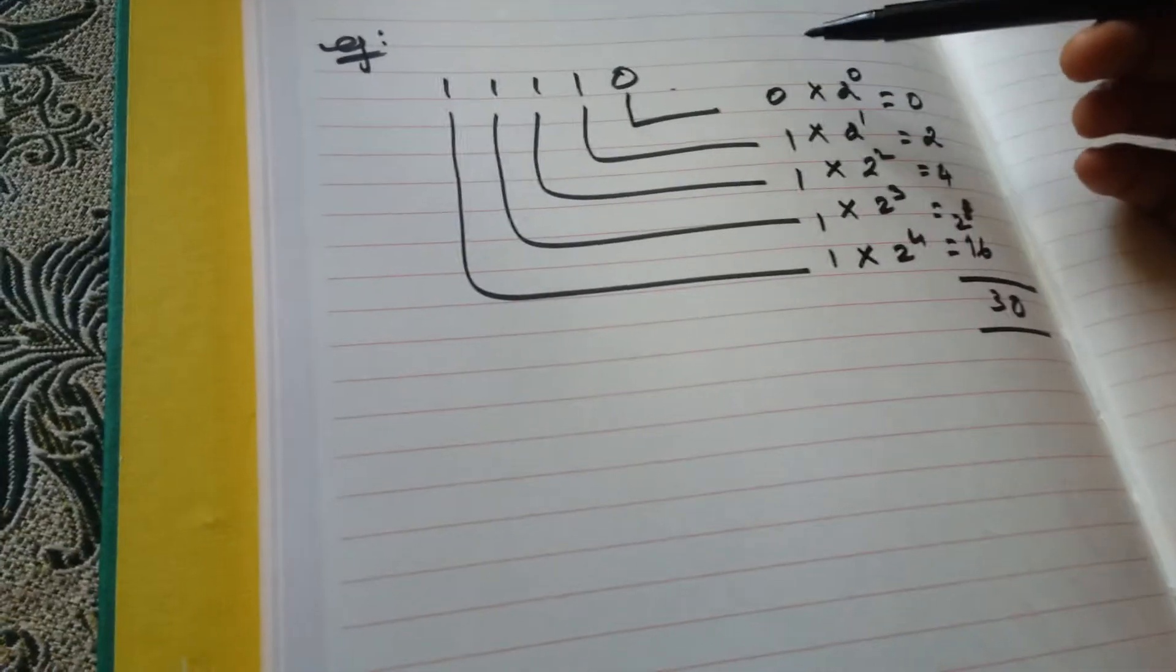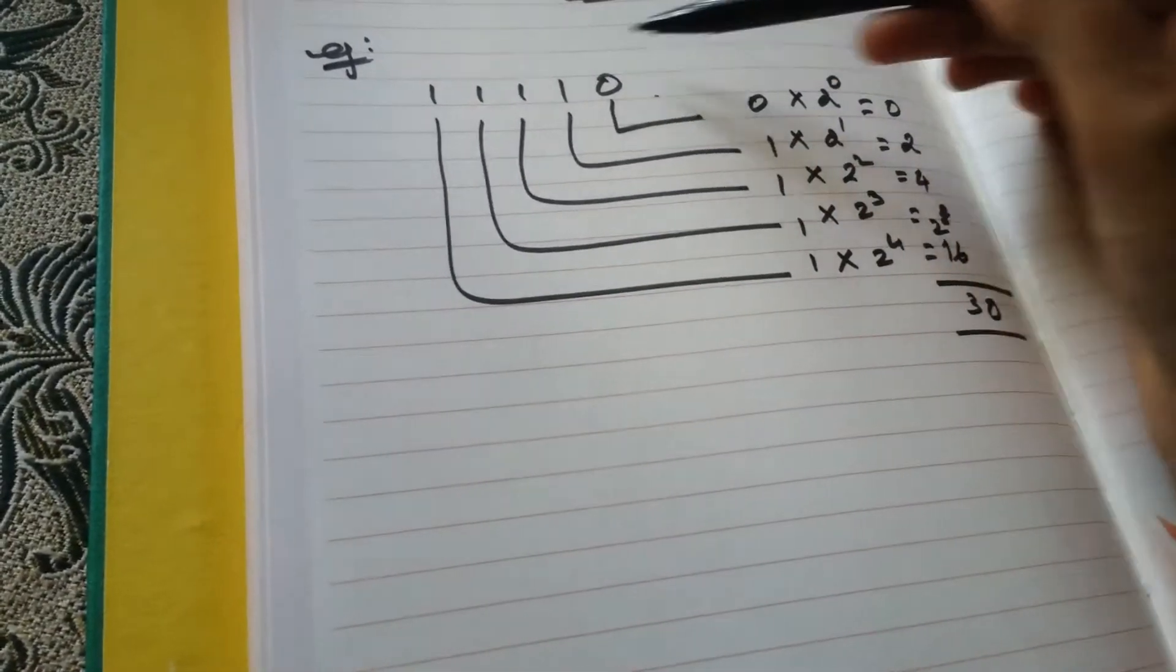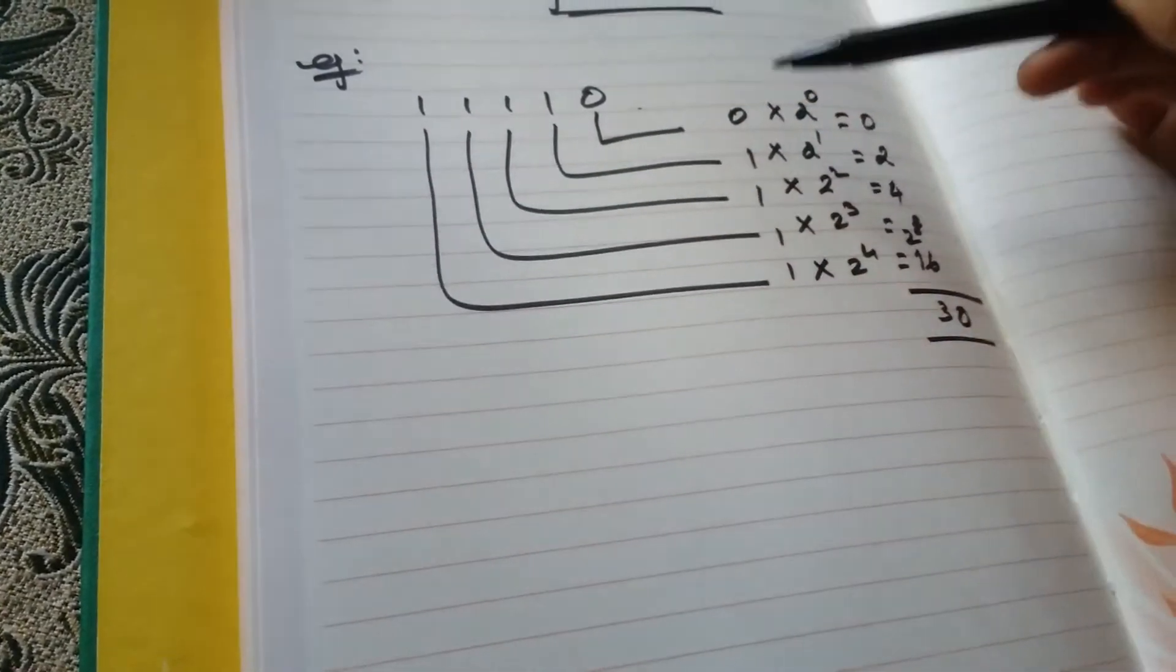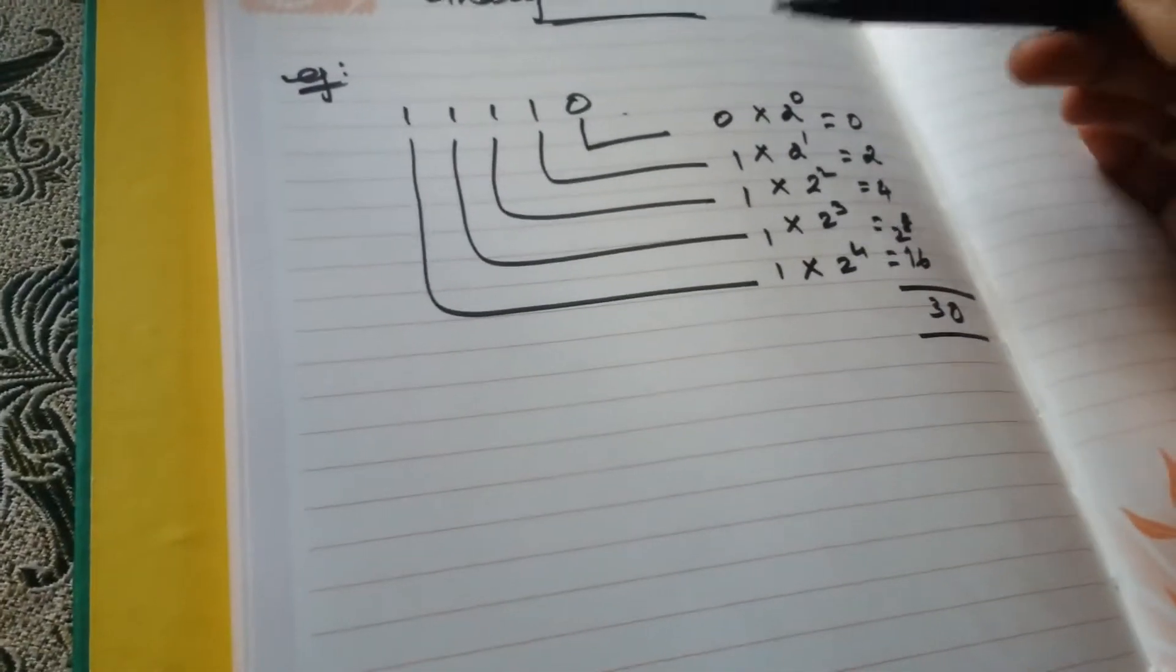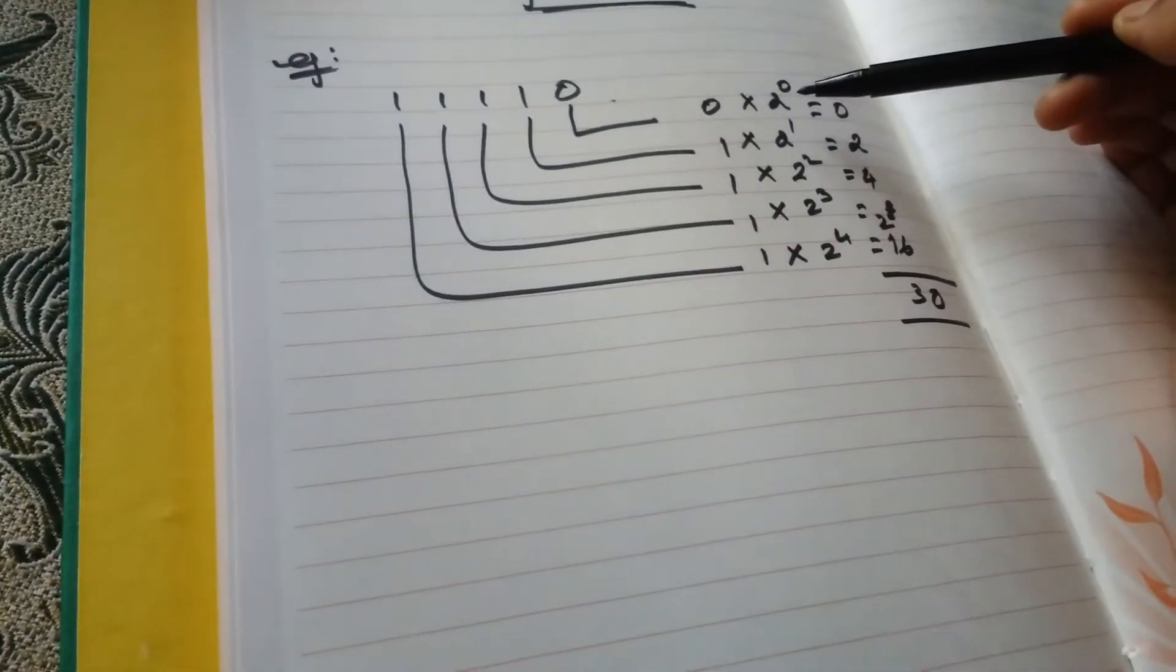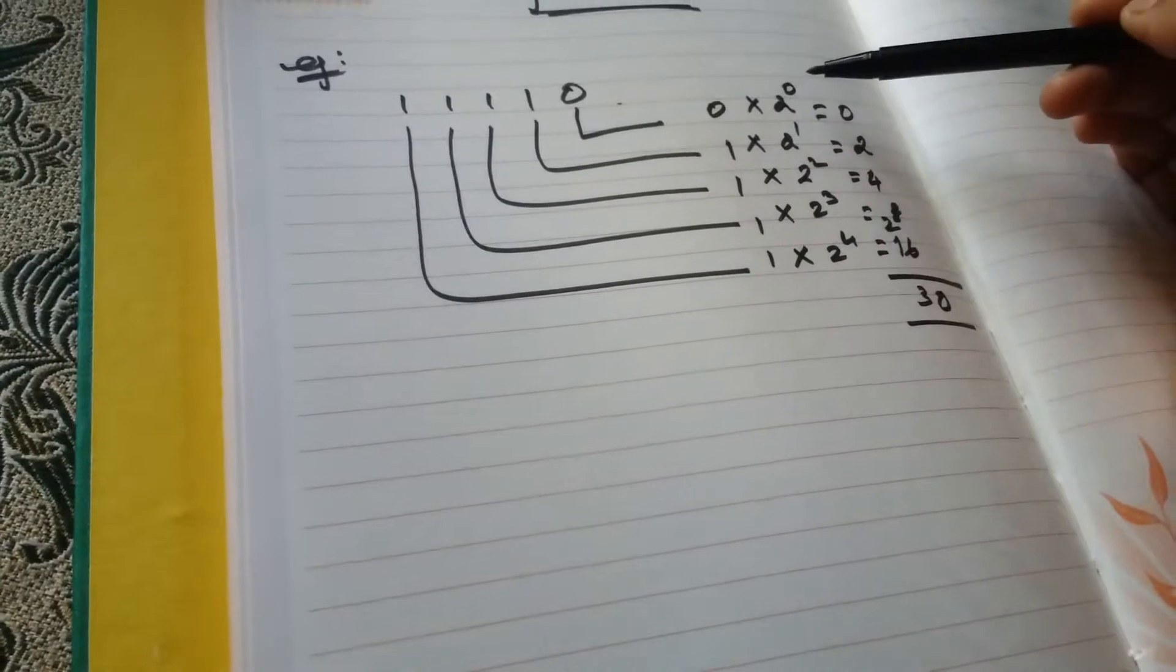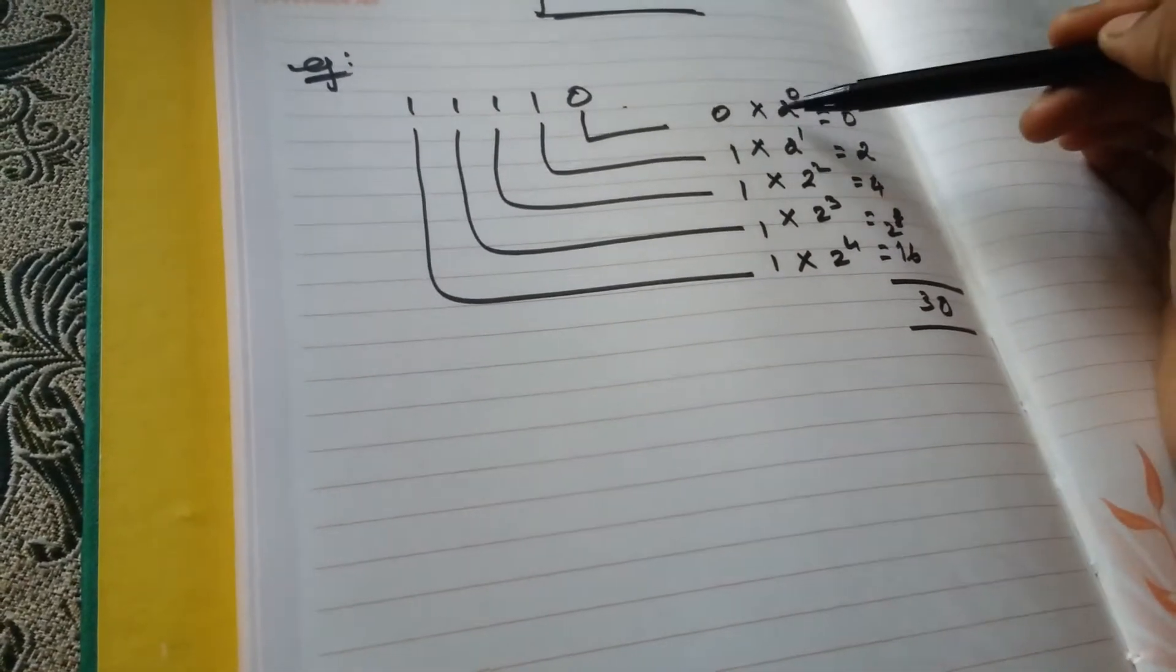So what you have to do is just list down the numbers that is given here: zero, one, one, one, and one. And then multiply it with the powers of two starting from zero. So zero into two power zero, two power one, two power two, two power three, and two power four.